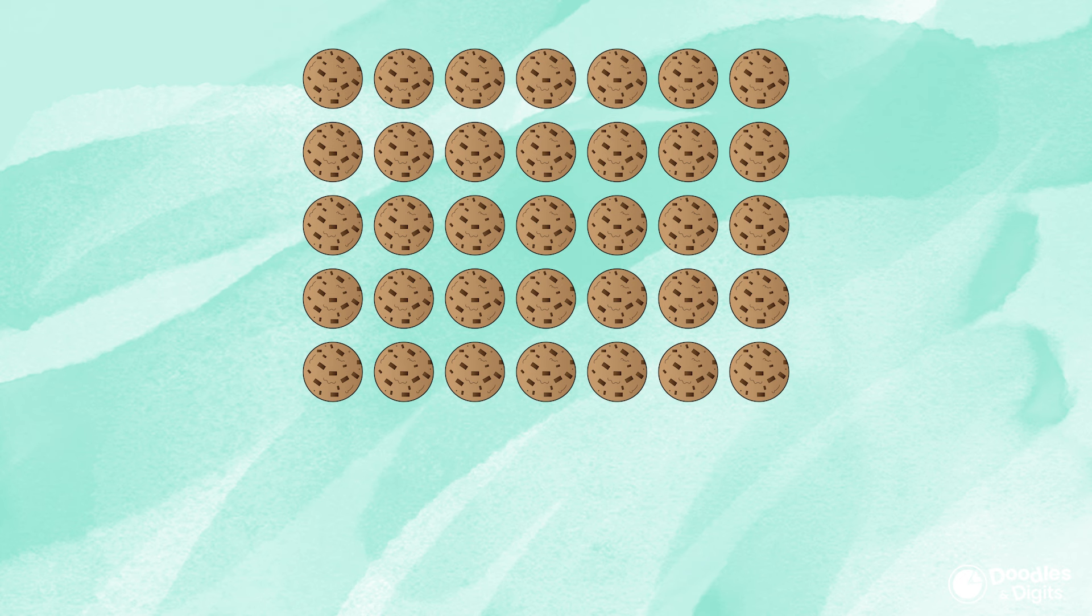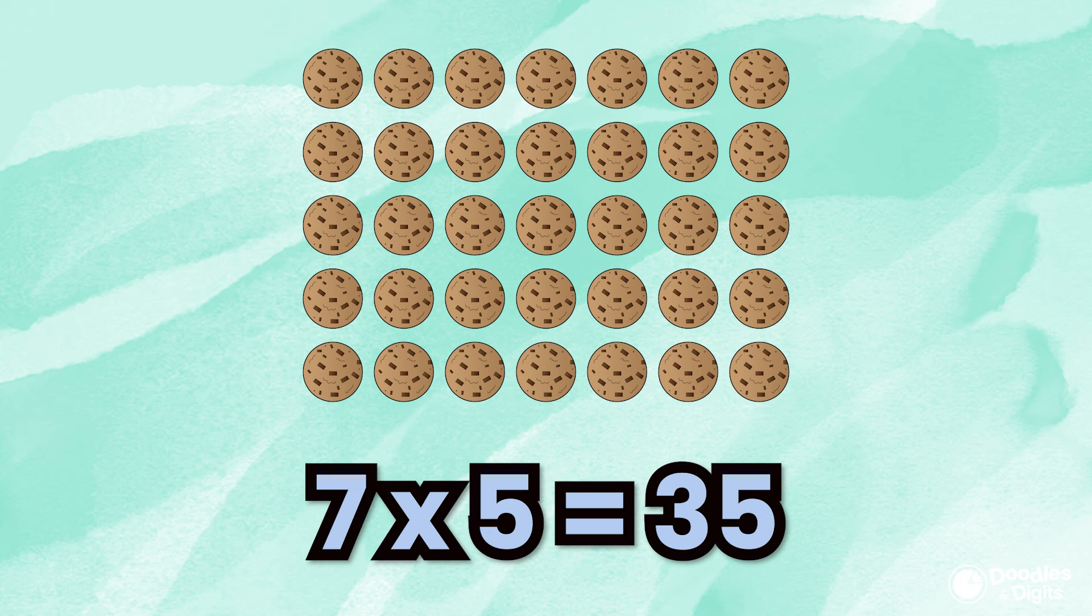Alright, now that we've done a few together, let's see if you can do a few on your own. Alright, what equation is this array showing? Remember to count the columns and the rows. This array is showing 7 times 5 equals 35 because there are 7 columns and 5 rows.